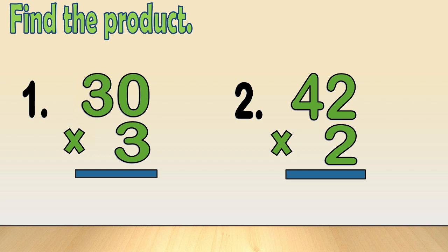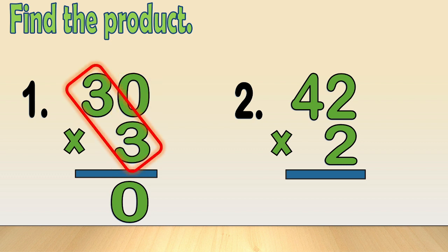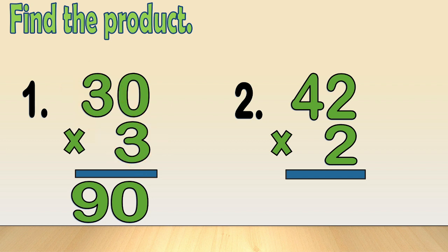Find the product. Number 1: 30 times 3. Multiply the multiplier by the digits in the ones and tens place, respectively. Write the product in their corresponding places. So, 0 times 3 equals 0, and 3 times 3 is equal to 9. So, 30 times 3 is equal to 90.